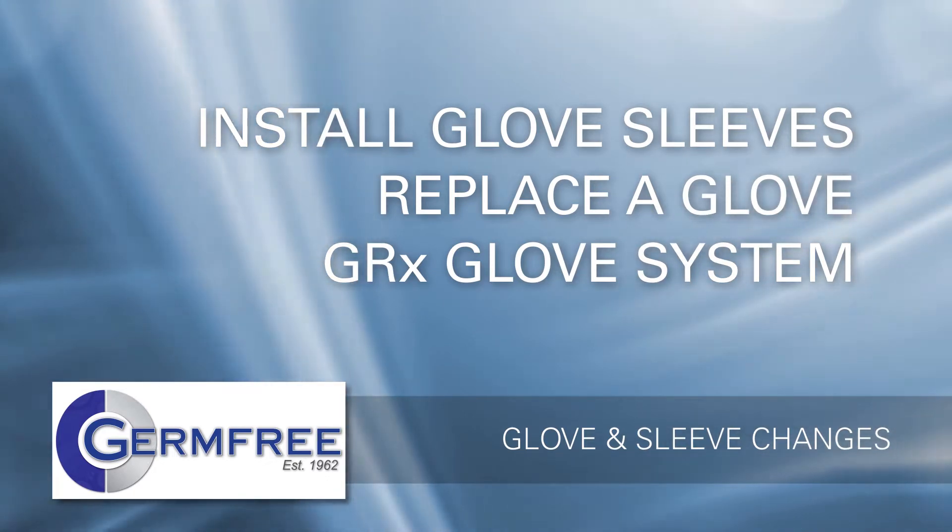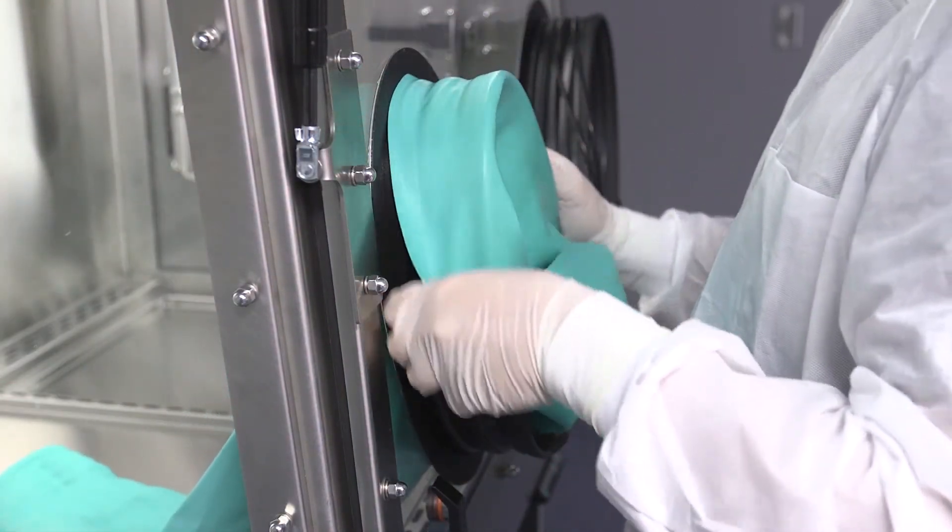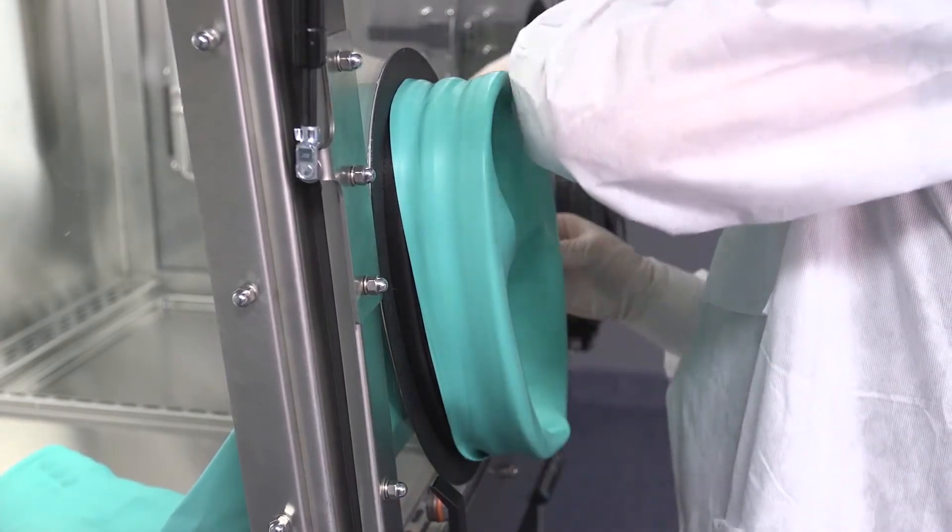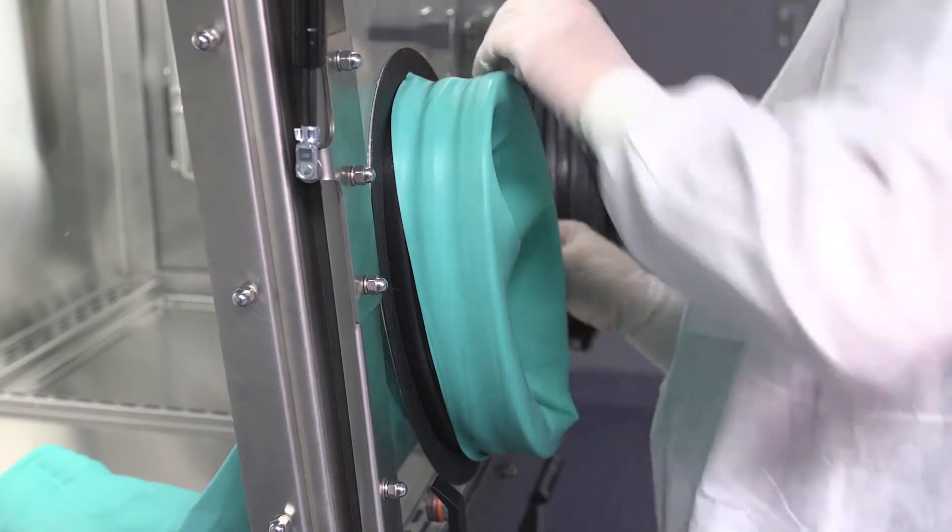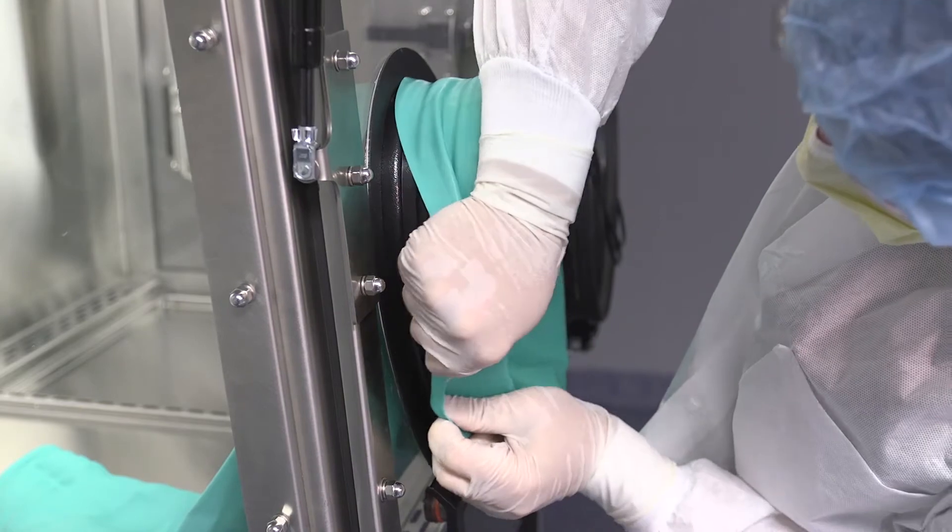How to Install Glove Sleeves. Regardless of the sleeve type that you're using, the sleeve should wrap easily around the outside of the glove ports. Pull the open edge of the sleeve over the black plastic glove port so that both O-rings can hold the sleeve in place.